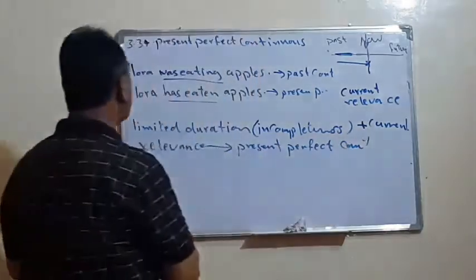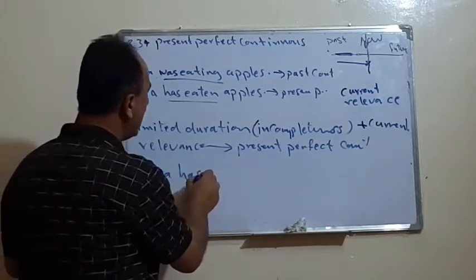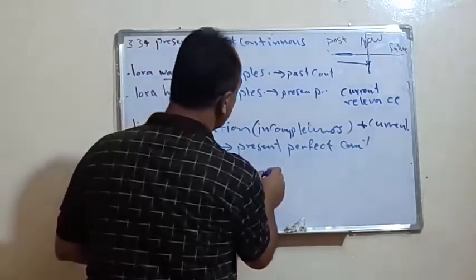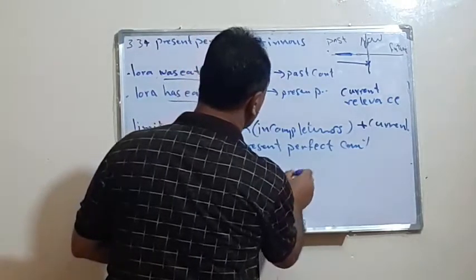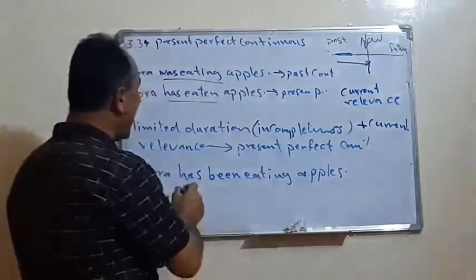So, if we want to say the sentence, we can say, Laura, say, has been what? Eating. Has been eating what? Let's say, apples. See, has been eating.